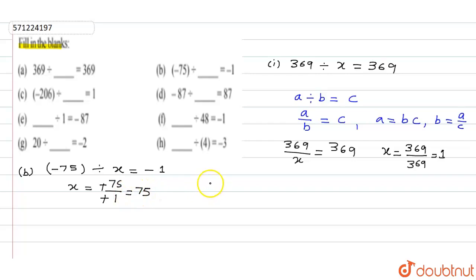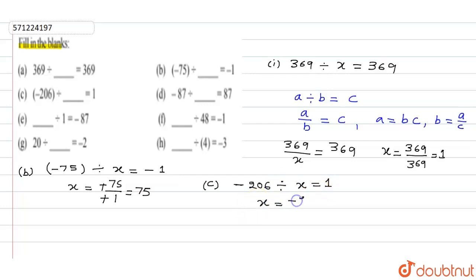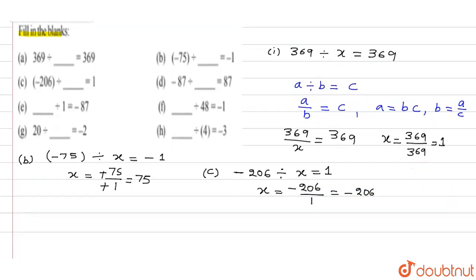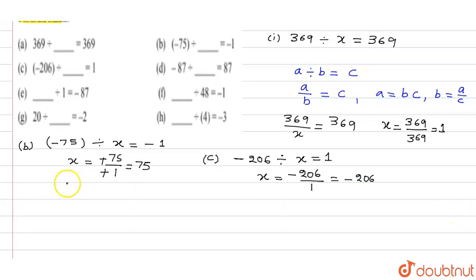Question c: minus 206 divided by x equals 1. The value of x equals minus 206 divided by 1, which equals minus 206.